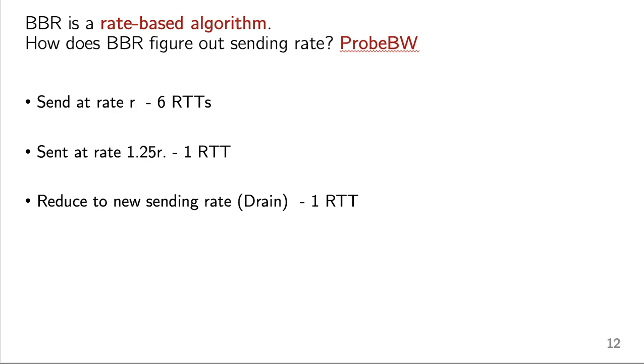Then it's going to see, can I put more data into the network and get better throughput? So it's going to send at 1.25 times R, so 25% more, for one RTT. And it's going to see if it gets better throughput. Finally, it's going to reduce to its new sending rate whatever it thinks its new maximum throughput it can get is in the following RTT. So in total, BBR is going to see what maximum throughput it can get over these steps that take about eight RTTs. And BBR will repeat these steps over and over again.